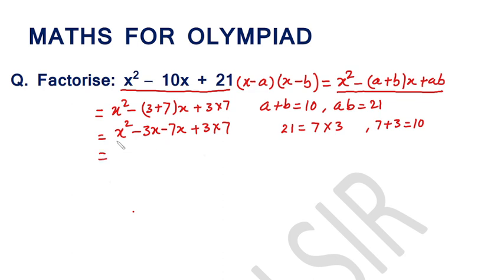Now, we regroup these two terms in one group and these two terms in one group. Then it becomes x² - 3x - 7x - 3 into 7.